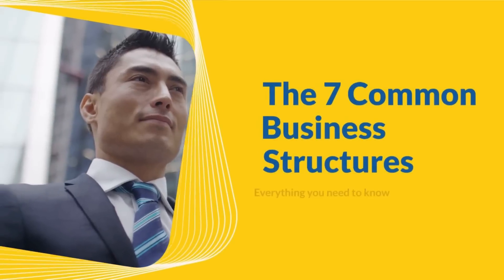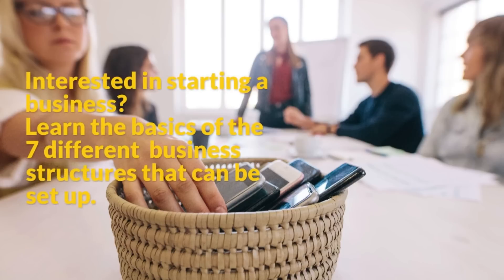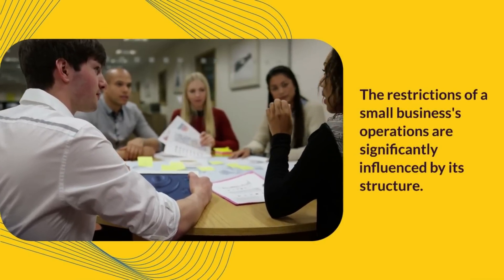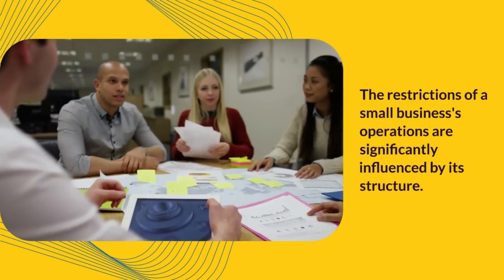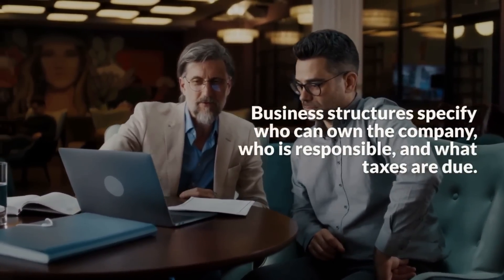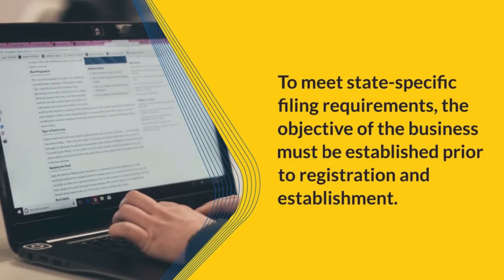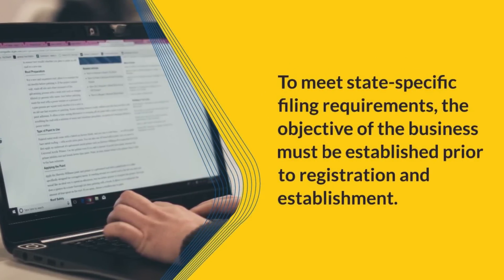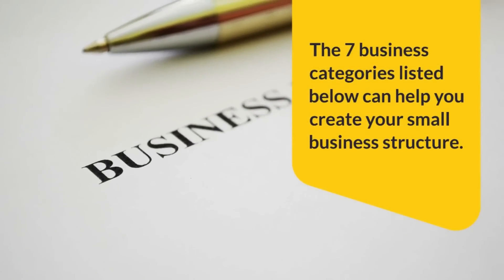This video examines the seven common business types. Are you interested in starting a business? Learn the basics of the seven different business structures that can be set up. The restrictions of a small business's operations are significantly influenced by its structure. Business structures specify who can own the company, who is responsible, and what taxes are due. To meet state-specific filing requirements, the objective of the business must be established prior to registration and establishment.